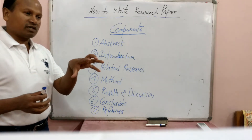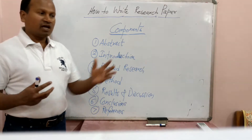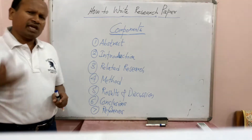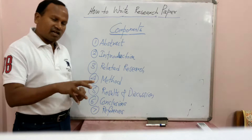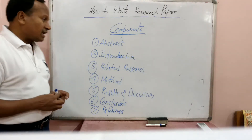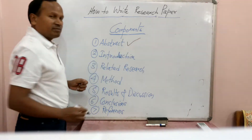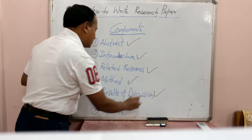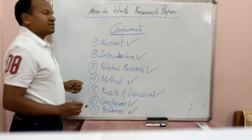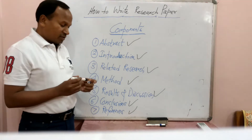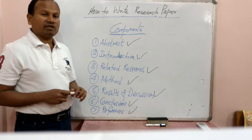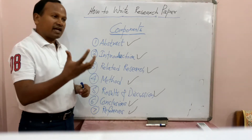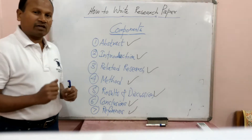So if you take a topic, how do we write that paper, how do we present and complete writing that particular research paper — before that we need to understand which are the main components in any research paper. The generalized components are: abstract — in all research papers there will be an abstract — introduction, the related research, method, results and discussion, conclusions, and references. Abstract and conclusions are components which we can write at the end of the paper; that would be the better option.